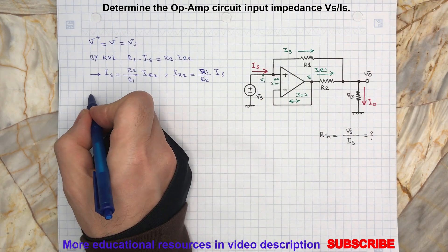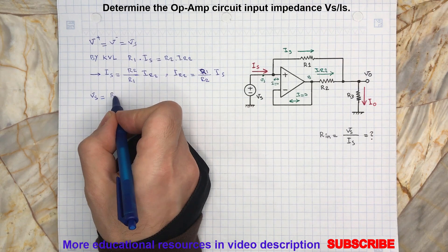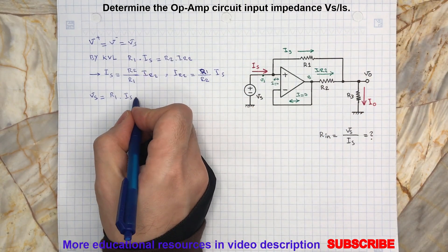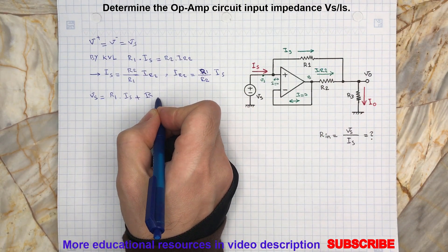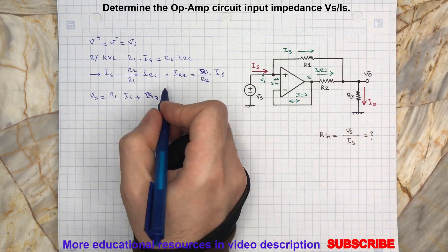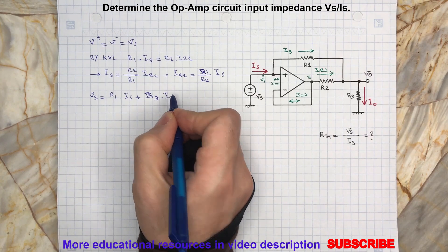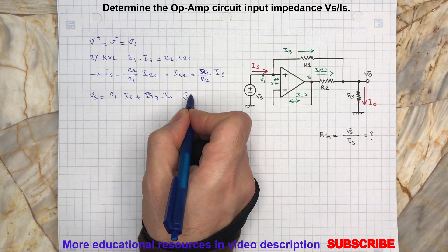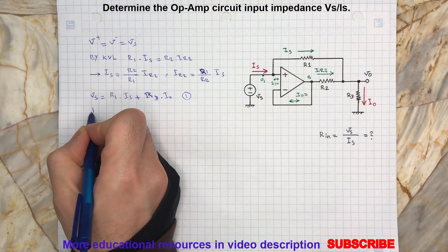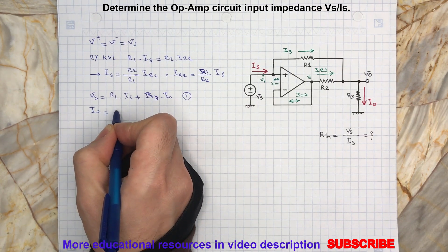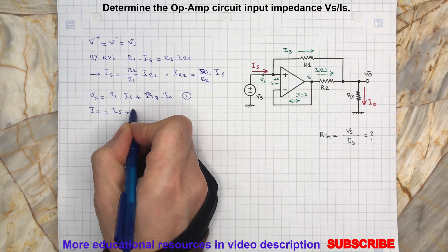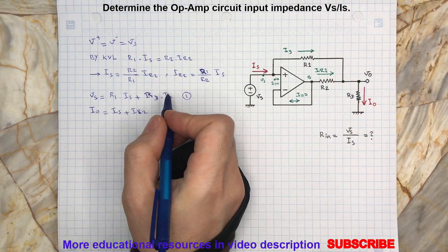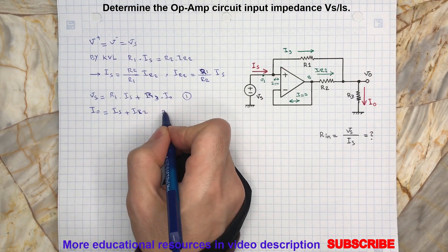We know that Vs is equal to R1 times Is. By KVL: R1·Is plus R3·IO plus this voltage is equal to Vs — we can call this equation 1. We also know that IO is equal to Is plus IR2 — we can call this equation 2.